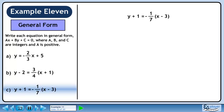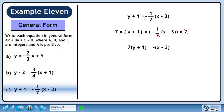Now we'll convert the equation in Part C to general form. Multiply both sides by 7. Cancel the 7s on the right side. Rewrite this so it's easier to read. On the left side, distribute 7 through the brackets. On the right side, distribute the minus through the brackets. Bring all the terms to the left side. This is now in general form since there are no fractions and the x coefficient is positive.